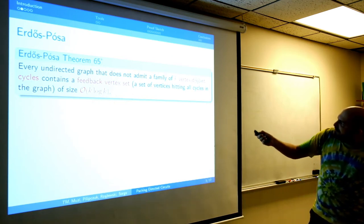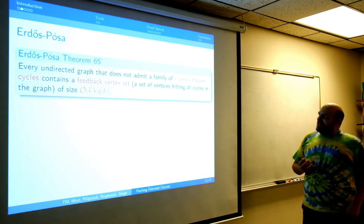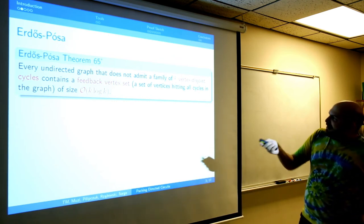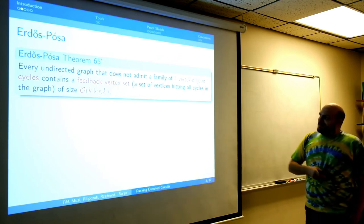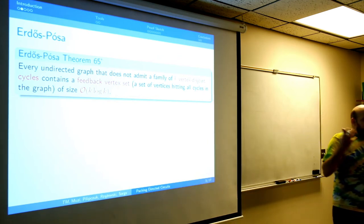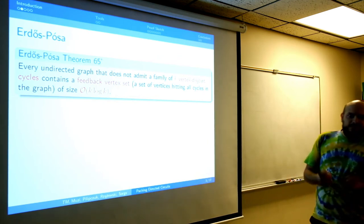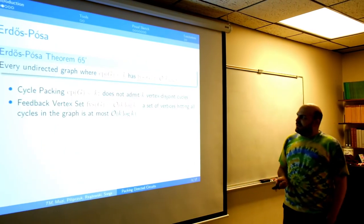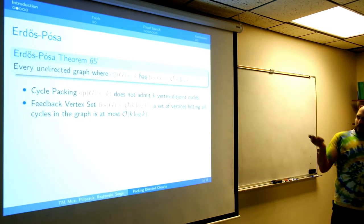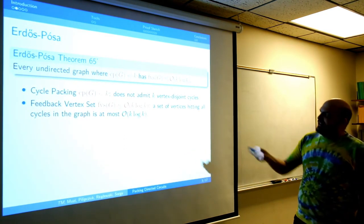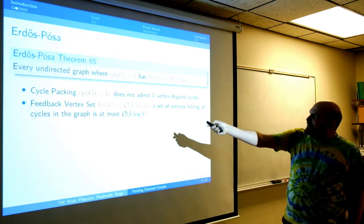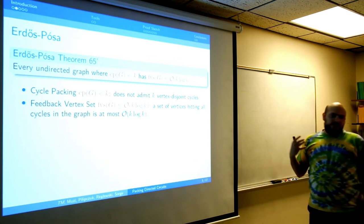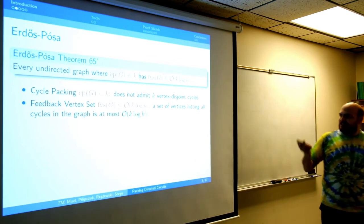Vertex-disjoint cycles are easy to imagine. The feedback vertex set is a set such that if you remove it from the graph, you end up in a forest — you don't have any cycles. So cycle packing being at most k implies the feedback vertex set is at most order k log k. This is the classical result.